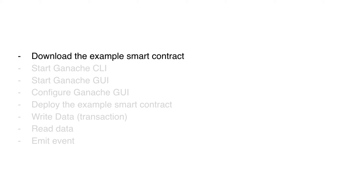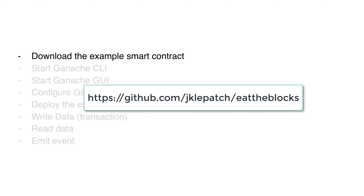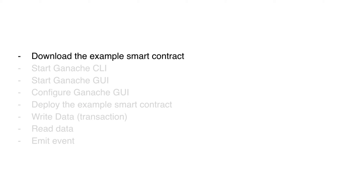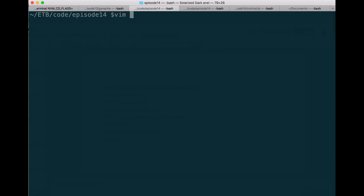The first thing we'll need to do is to download the example smart contract. For this, you will need to git clone the repository of Eat the Blocks. Go to this URL — I also put it in the description of this video — and go to the folder of this episode, which is episode 14. In this folder, you'll find the contract in the contracts folder. The contract name is todo.